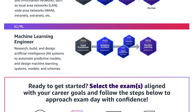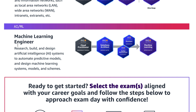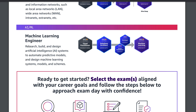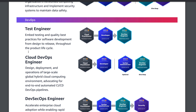For AI and ML, we have a Machine Learning Engineer path. The roles and responsibilities include researching, building, and designing artificial intelligence systems to automate predictive models, and designing machine learning systems and models. If you want to go with the machine learning path, you need Cloud Practitioner foundational certification, Solutions Architect Associate, optionally SysOps Administrator Associate or Developer Associate, and finally the Machine Learning Specialty certification.